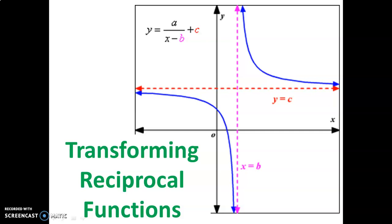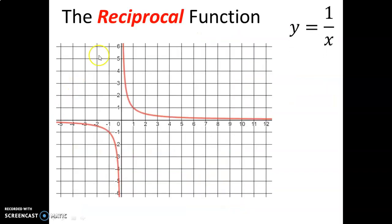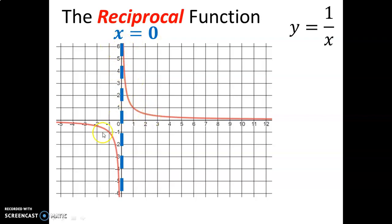Welcome to your lesson on transforming reciprocal functions. Last time we looked at what a reciprocal function is — it takes a specific form and the graph looks like two curves separated by asymptotes. There's a vertical asymptote at x equals 0, meaning the curves approach that line from both sides but never reach it. It's like a hole or gap in the graph. There's also a horizontal asymptote at y equals 0.